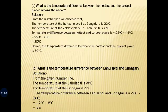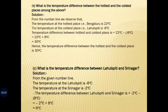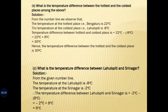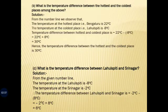As per the number line already observed, the temperature at the hottest place — Bengaluru — is 22 degree Celsius, a positive integer. The temperature at the coldest place — Lahulspiti — is minus 8 degree Celsius, a negative integer. The temperature difference between the hottest and coldest place is 22 minus (minus 8), which equals 22 plus 8, giving 30 degree Celsius.